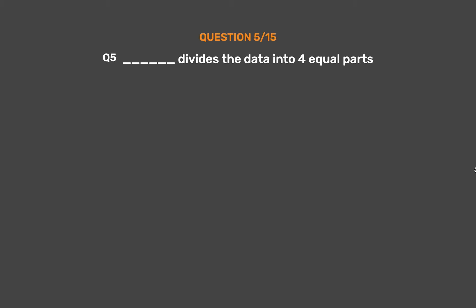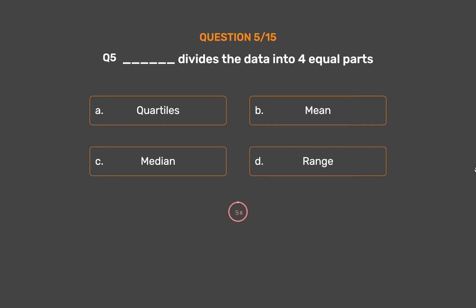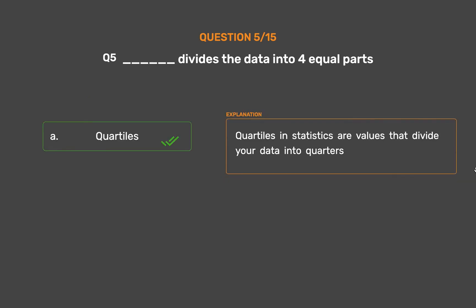Question number 5. Blank divides the data into 4 equal parts. Option A: Quartiles. Option B: Mean. Option C: Median. Option D: Range. The correct answer is Option A: Quartiles. Quartiles in statistics are values that divide your data into quarters.